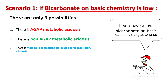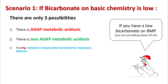Scenario one: if your bicarb on basic chemistry is low — and here we are talking about significantly low bicarb, not slightly low bicarb — there can be only three possibilities. Either there is an anion gap metabolic acidosis, a non-anion gap metabolic acidosis, or rarely, metabolic compensation for respiratory alkalosis.